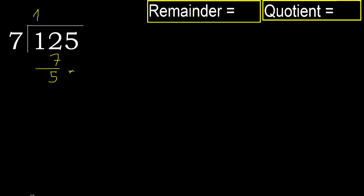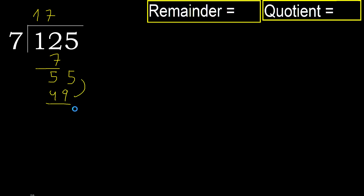55. 7 multiplied by 8 is greater. Multiplied by 7 is 49. 49 is not greater. Subtract: 6.